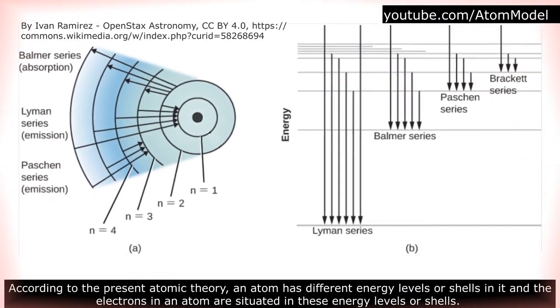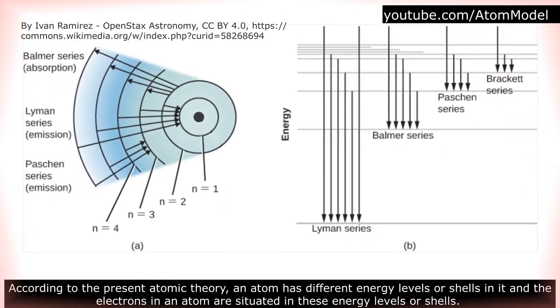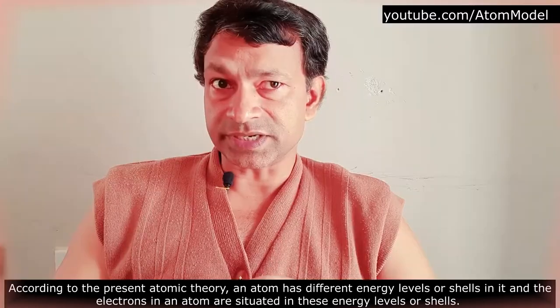According to the present atomic theory, an atom has different energy levels or shells in it and the electrons in an atom are situated in these energy levels or shells.